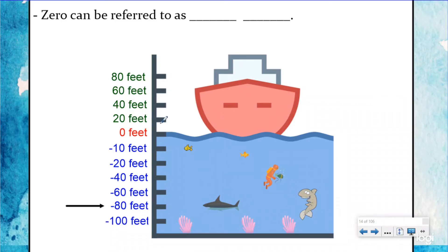So when you hear something like Mount Everest being, I don't know, five miles tall, that's five miles above sea level. This is where they start counting. When you talk about swimming 10 feet under the water, that's 10 feet below sea level. So when you're talking about elevation, zero can be referred to as sea level.